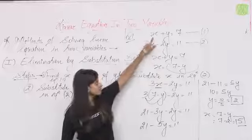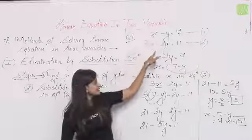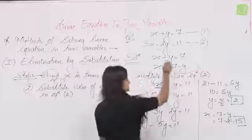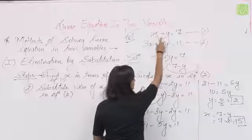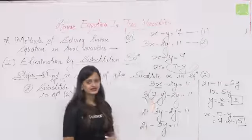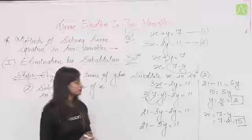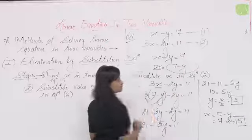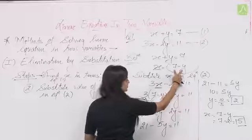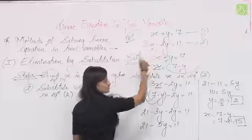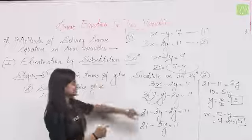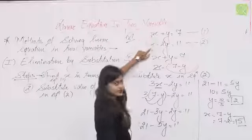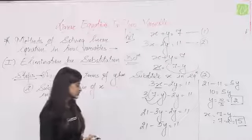Last class में पढ़ा था — एक equation को solve करें तो infinite values मिलेंगी, second equation को solve करें तो भी infinite values। लेकिन एक common solution जो दोनों को satisfy करे वो है x = 5, y = 2। Verify: 5 + 2 = 7 ✓, and second equation also gives 11 ✓। यह था substitution method।